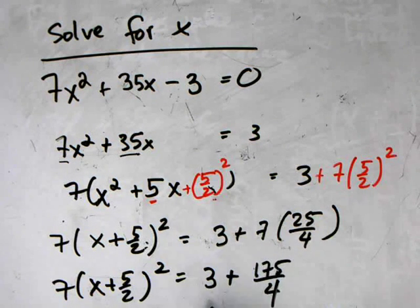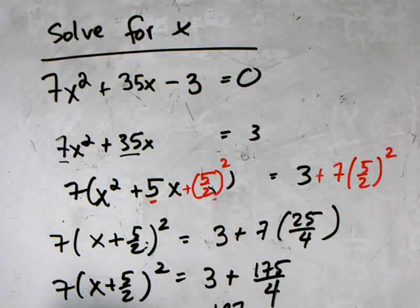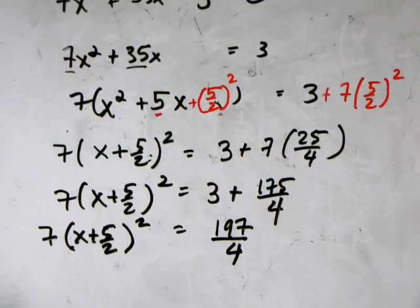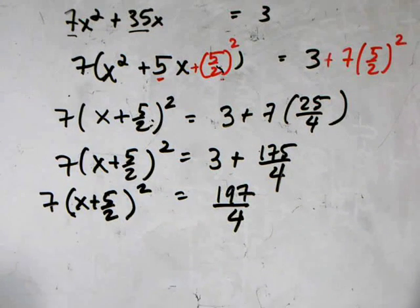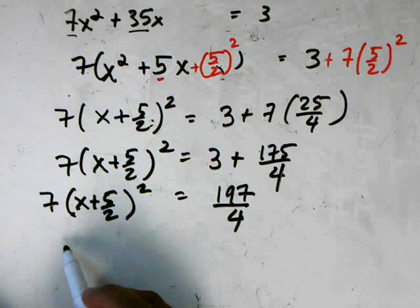I want to add 3 and 175/4 here, so this gives me 197/4. So 7(x + 5/2)² = 197/4. I'm going to divide both sides by 7.